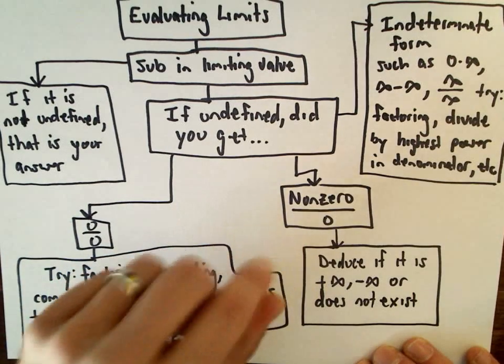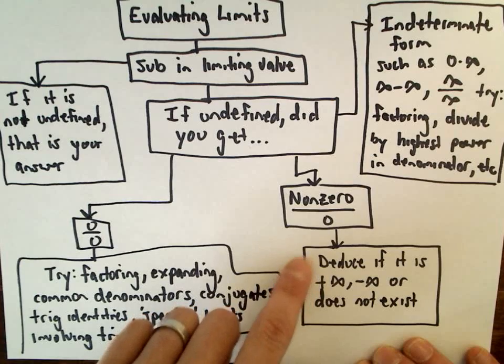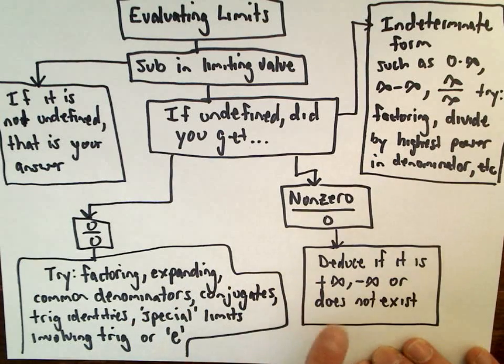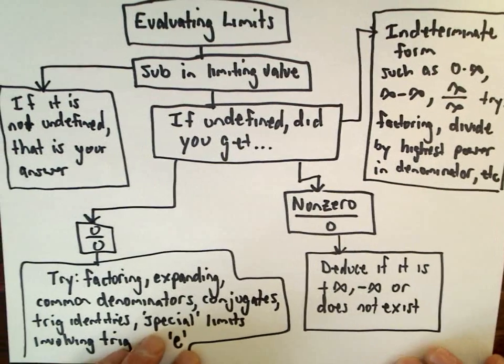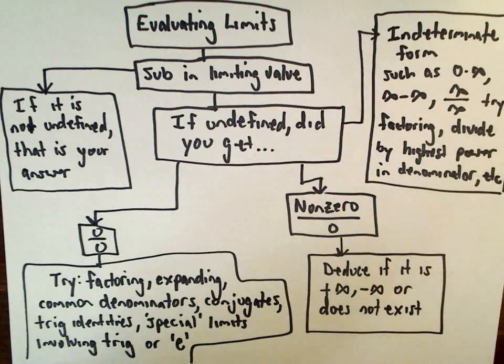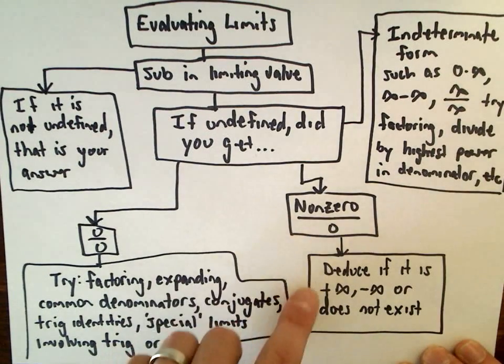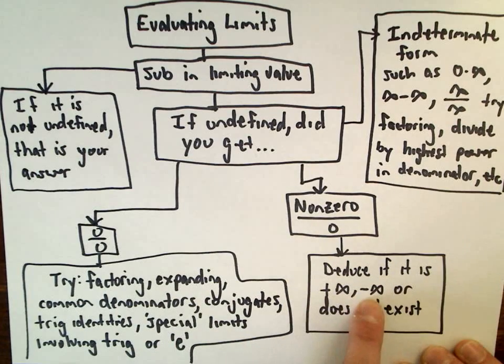If it's something non-0 over 0, try some algebra first, but usually what's going to happen is your solution typically is going to be positive or negative infinity. Or the limit might not exist. None of these rules, I would say, are always true, but they're good rules of thumb.